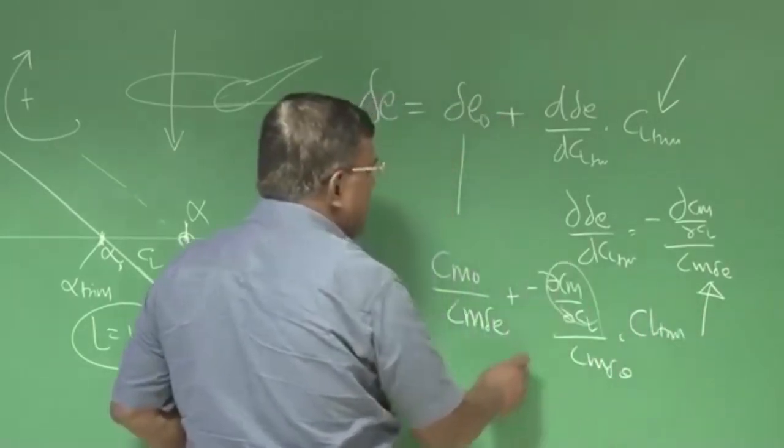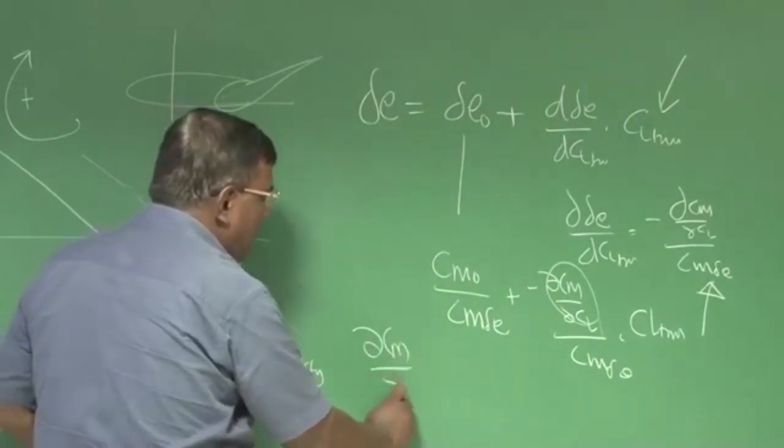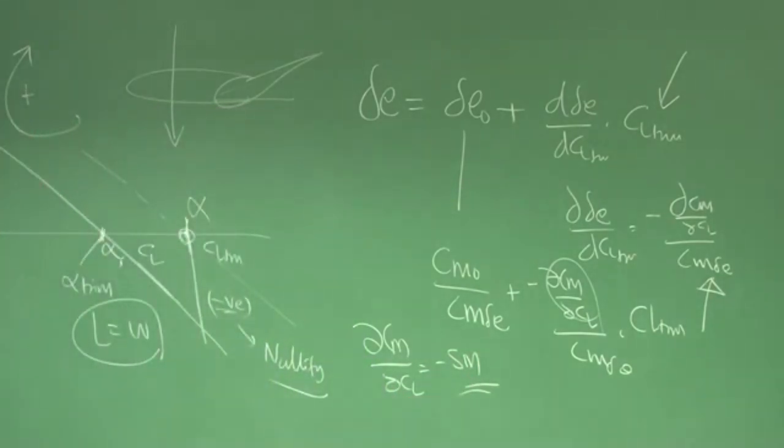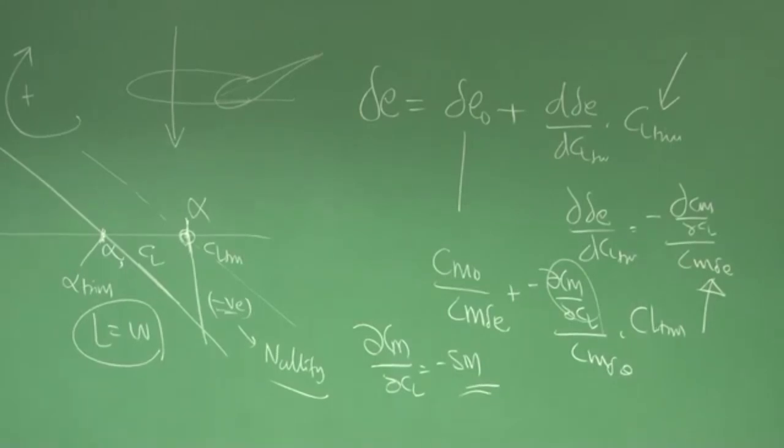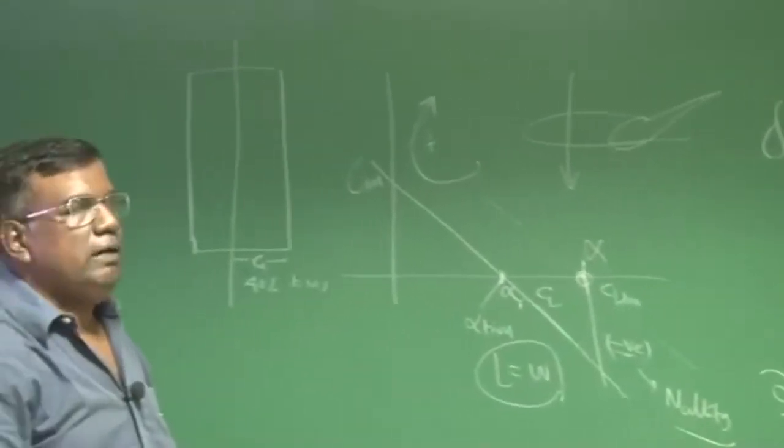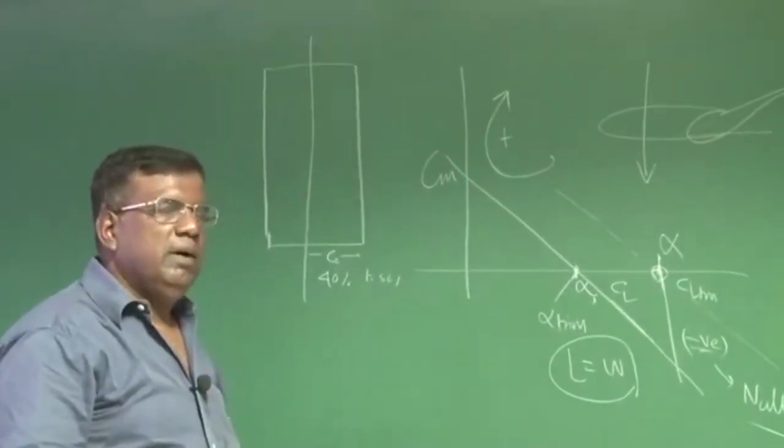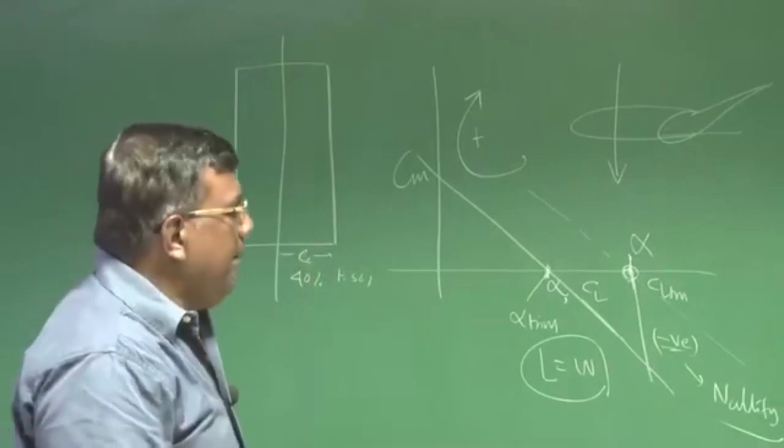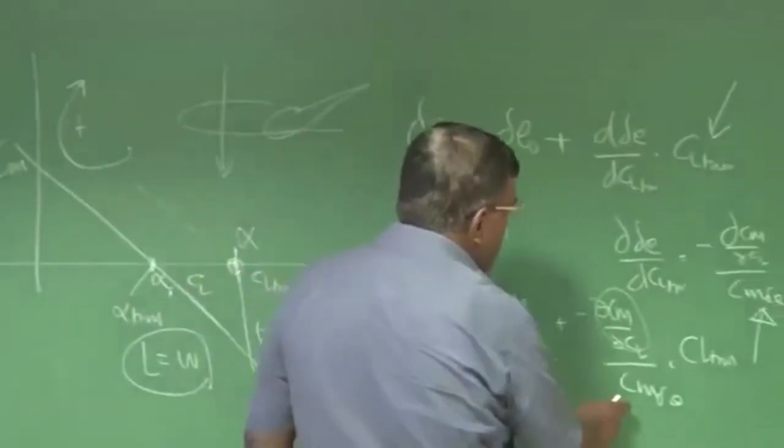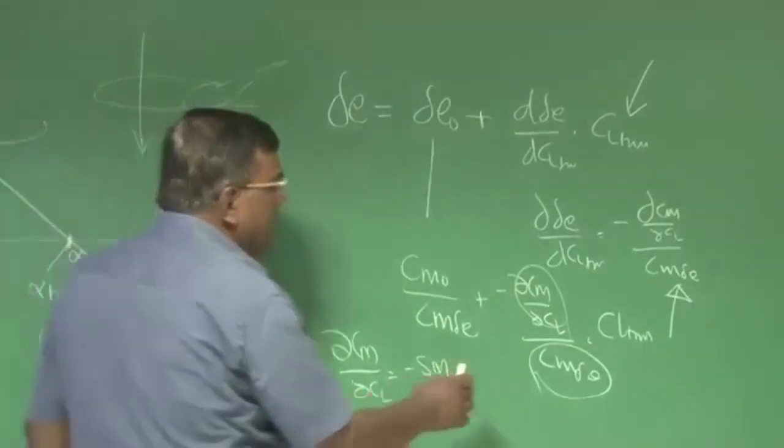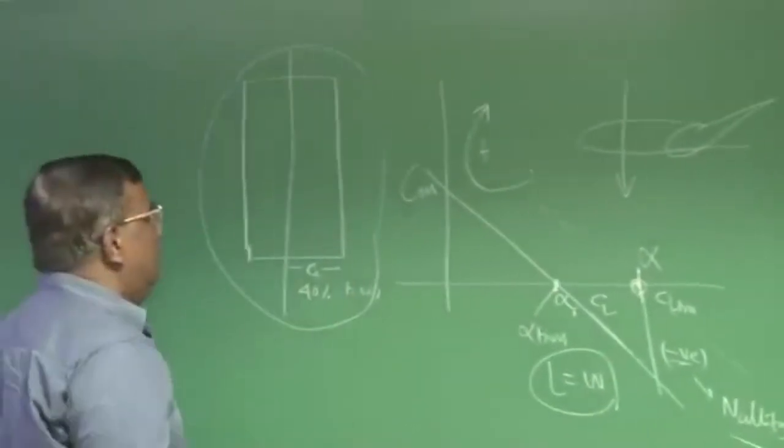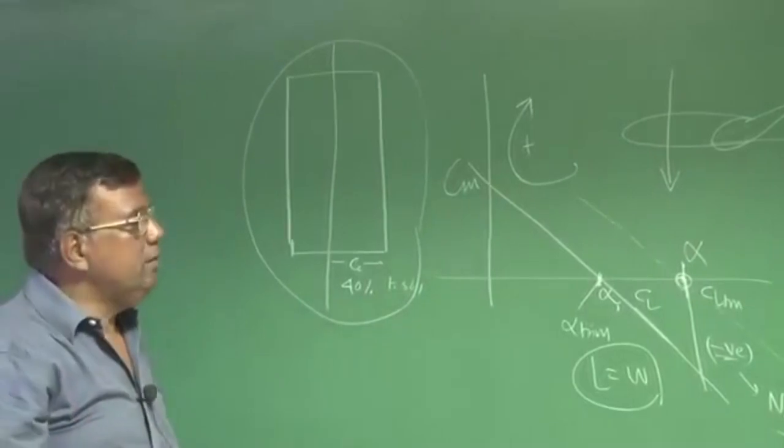You know dCM/dCL is minus static margin, and as a designer you have decided a priori that you will be designing the airplane for a particular static margin, maybe 10 percent, maybe 15 percent, that's your choice. As I repeatedly say, I start with 15 percent and I know that by Murphy's law there will be CG limitations and I will approach towards 10 percent. Now the question is what is CM_delta_E, how does this CM_delta_E get linked with the elevator sizing here.